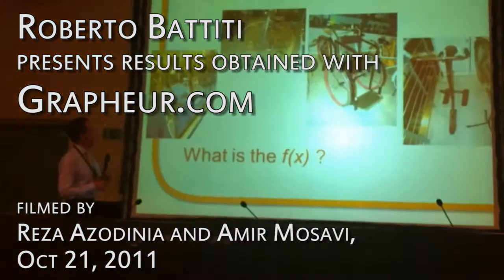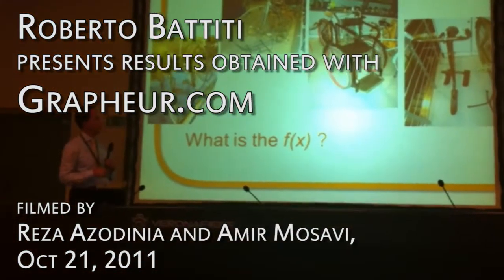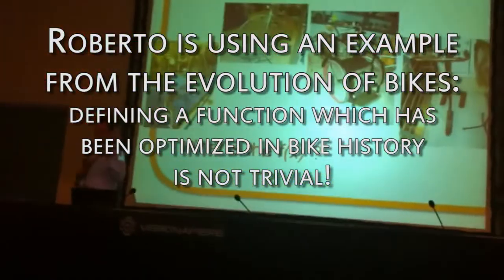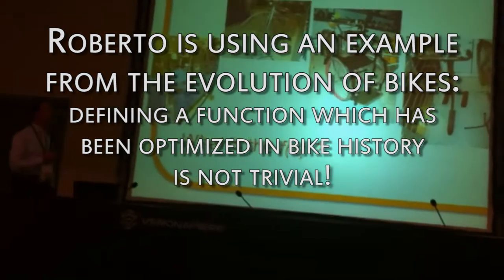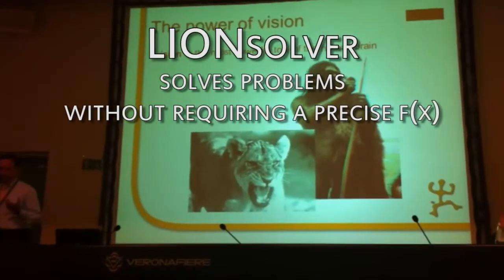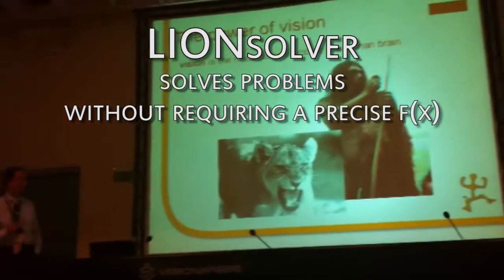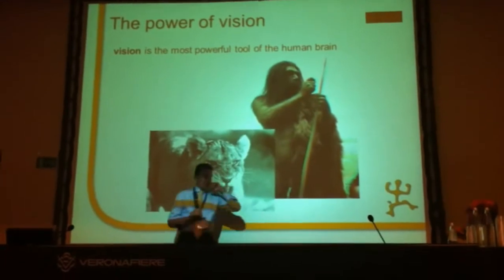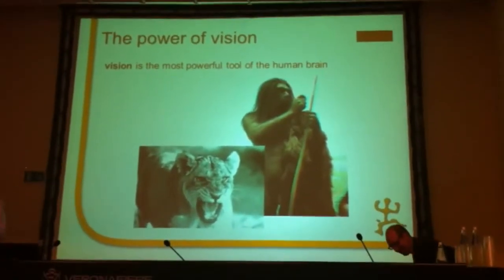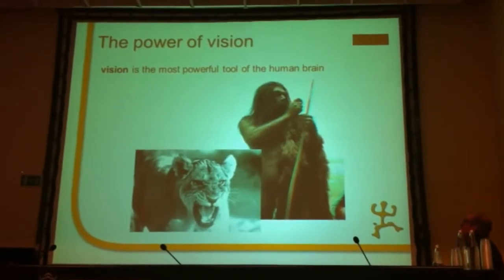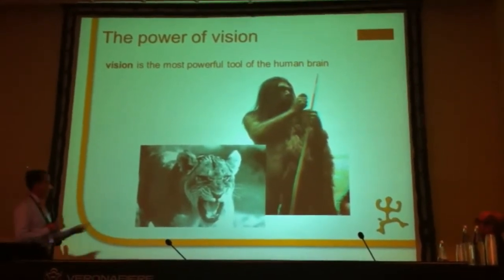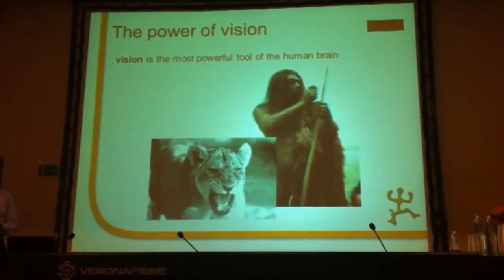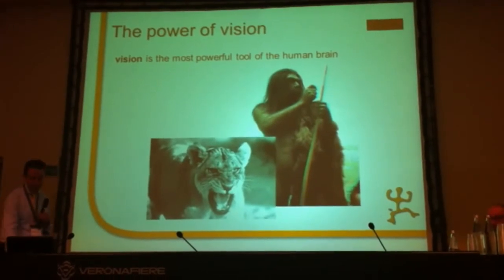On the history of bike design, you are familiar with the power of our visual system. Why? Because our ancestors, if they didn't have very powerful visual systems, they were eaten by predators, and they could not pass genes to future generations. So this is why now our visual system is very powerful.